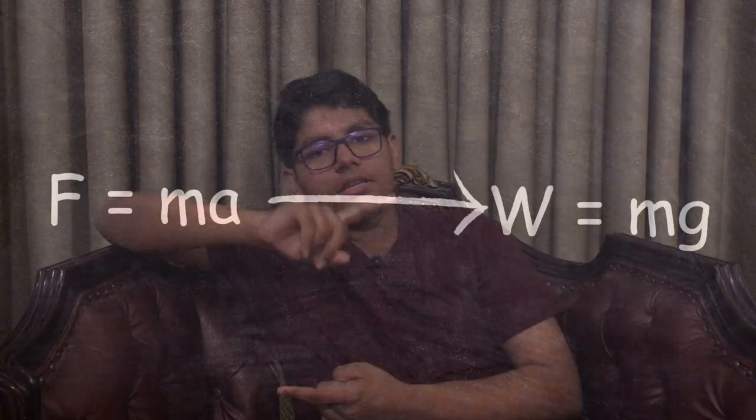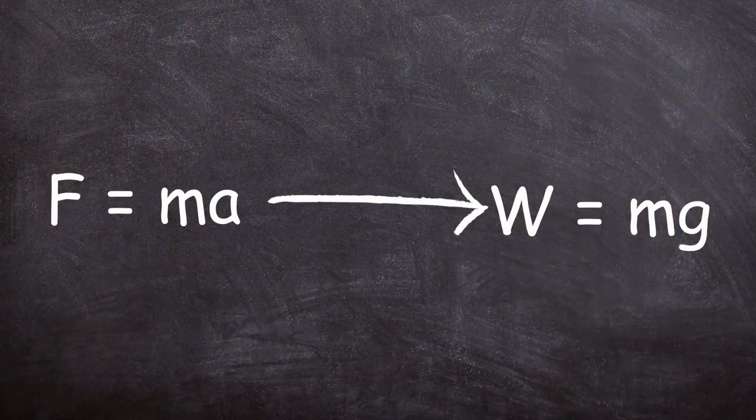If we use F = MA, we can derive the equation for weight: W = Mg, where W is the weight, M is the mass, and the acceleration, which is gravity, is g.